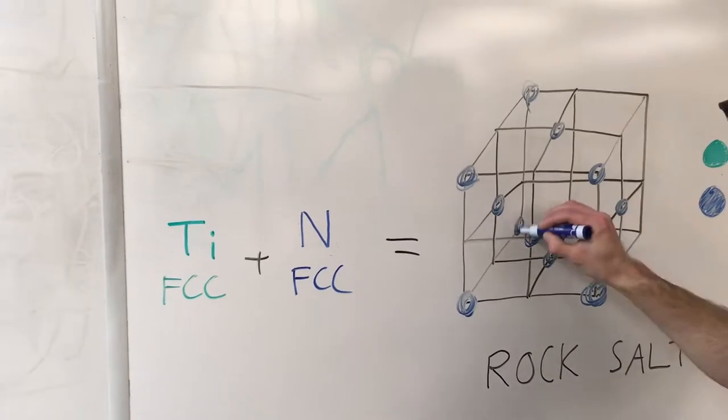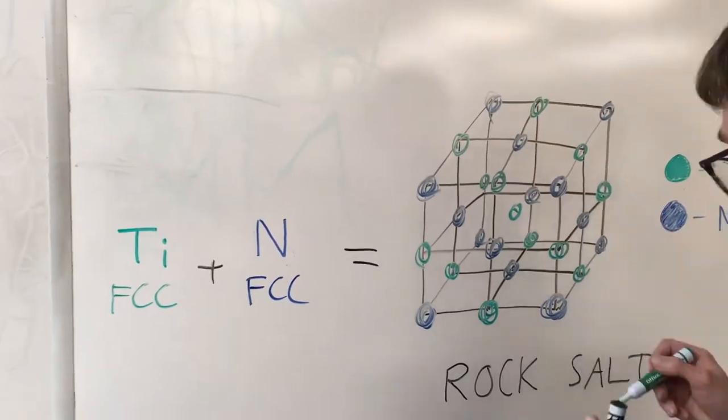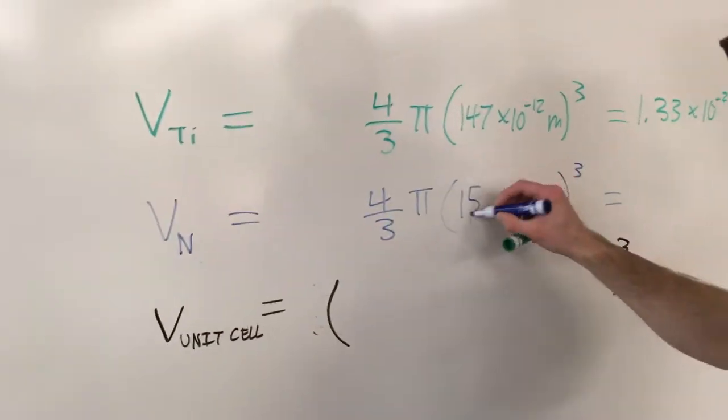Titanium nitride has a rock-salt crystal structure composed of two elements. This panel structure is the same as NaCl crystals. This crystal structure can be visualized as two FCC structures of each element that are interspersed.